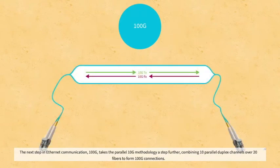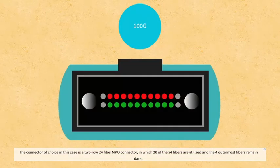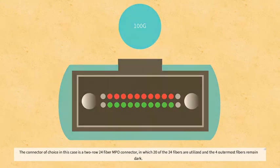100G, takes the parallel 10G methodology a step further, combining 10 parallel duplex channels over 20 fibers to form 100 gigabit connections. The connector of choice in this case is a two-row 24-fiber MPO connector in which 20 of the 24 fibers are utilized and the four outermost fibers remain dark.